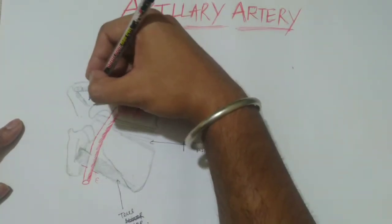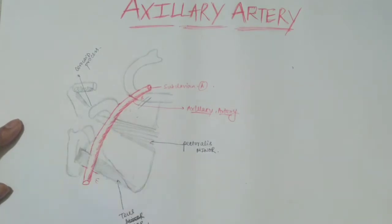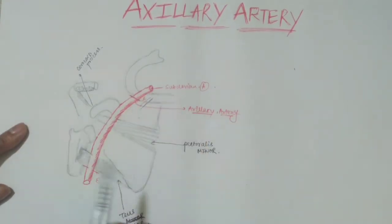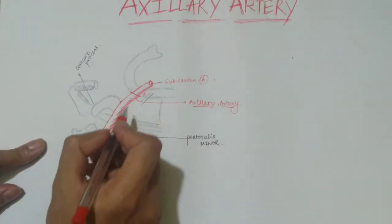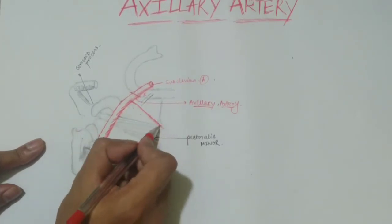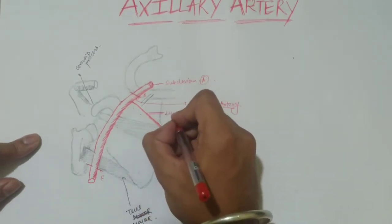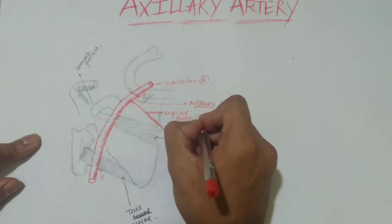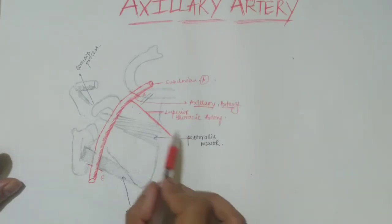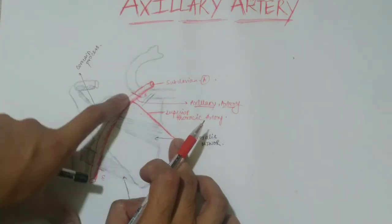The coracoid process is a key landmark here. From the first segment there is one branch: the superior thoracic artery. It arises and goes to the upper border of both pectoralis muscles. The superior thoracic artery supplies both the pectoralis muscles, the anterior serratus muscle, and muscles of the lateral thorax and intercostal regions. This is the only branch from the first segment of the axillary artery.